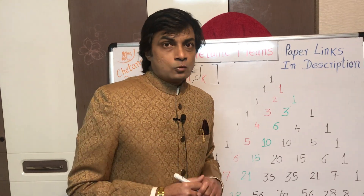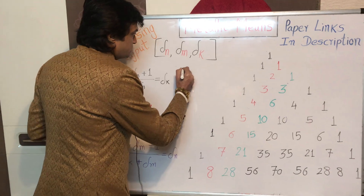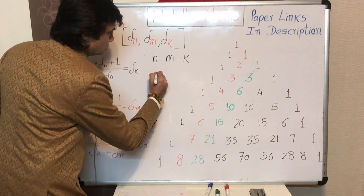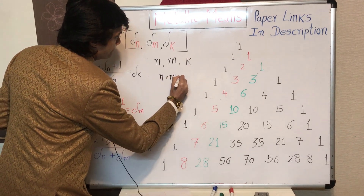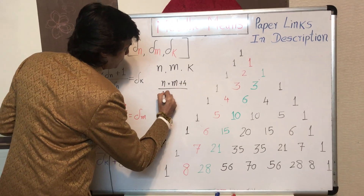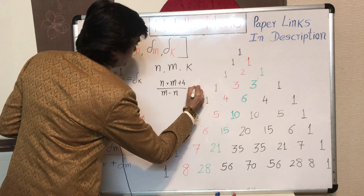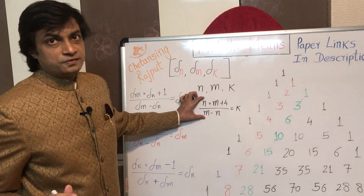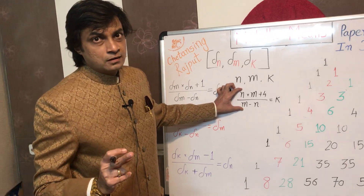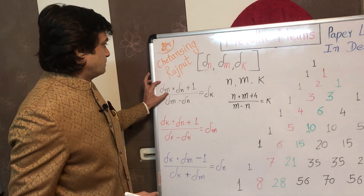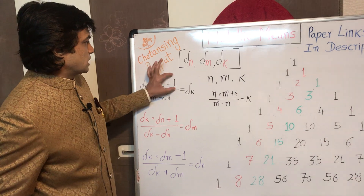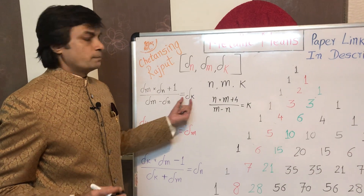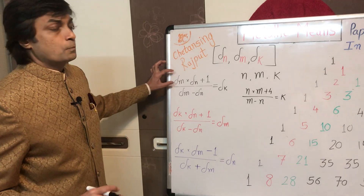One of those formulas was like this: consider any three positive integers n, m, and k such that n times m plus 4, upon m minus n, equals k. For three positive integers satisfying this prerequisite, we get a precise correlation — the product of the n-th and m-th metallic means plus 1, divided by the difference of the m-th and n-th metallic means, is precisely equal to the k-th metallic ratio.